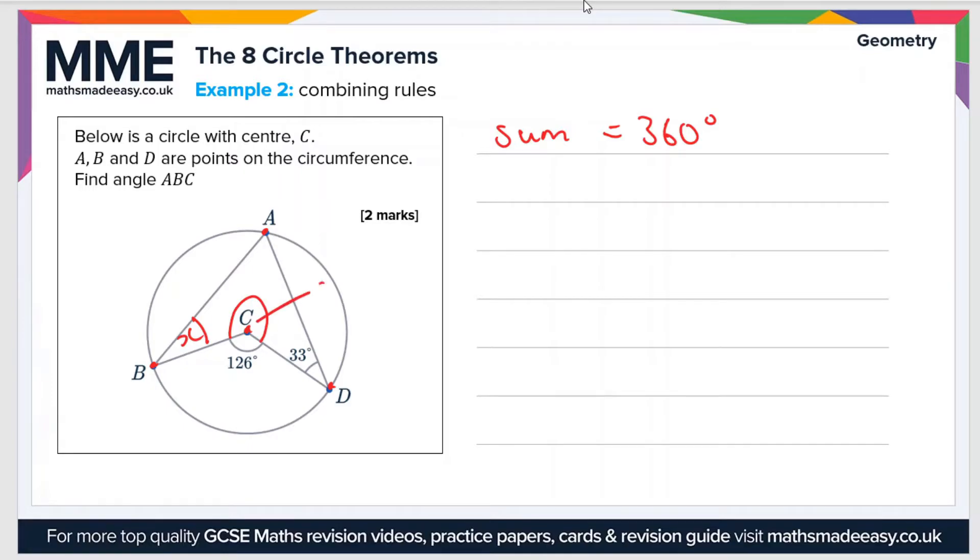So this angle here, let's call this angle y. So y equals 360 degrees minus 126 degrees, which is 234 degrees.